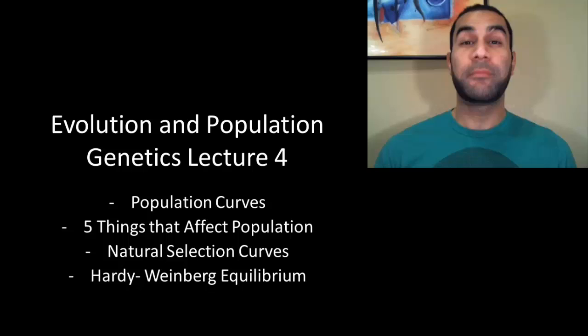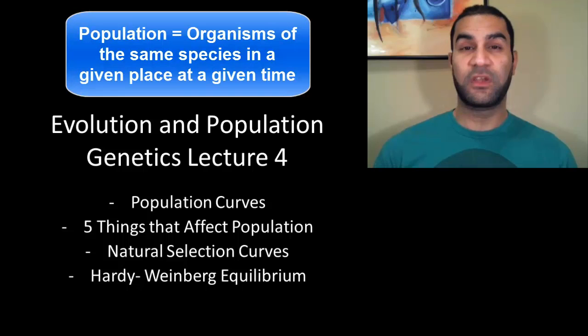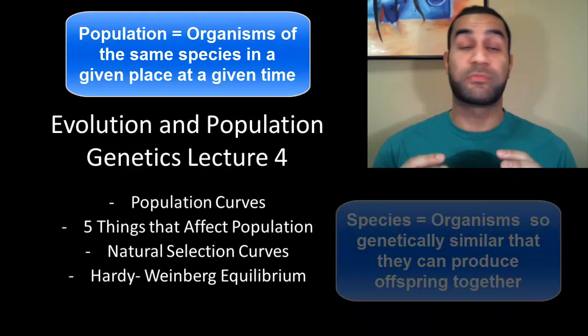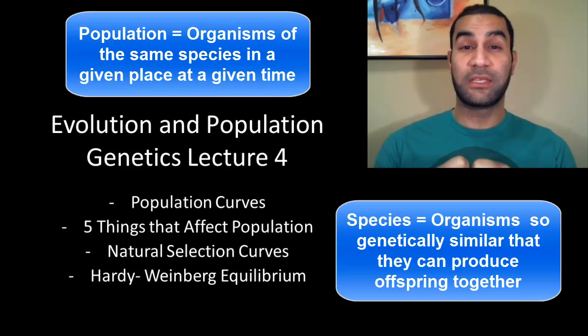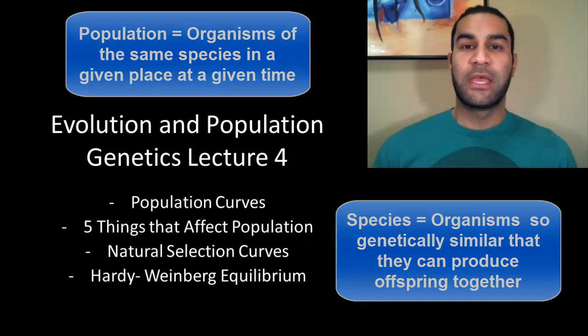Before we can get anywhere, we have to understand what a population actually is. In scientific terms, a population is all of the organisms of the same species within a given area at a given time. A species by definition is organisms that can produce offspring together. If two groups become so different that they can no longer produce offspring together, they are now two separate species or populations — that's the concept of speciation.